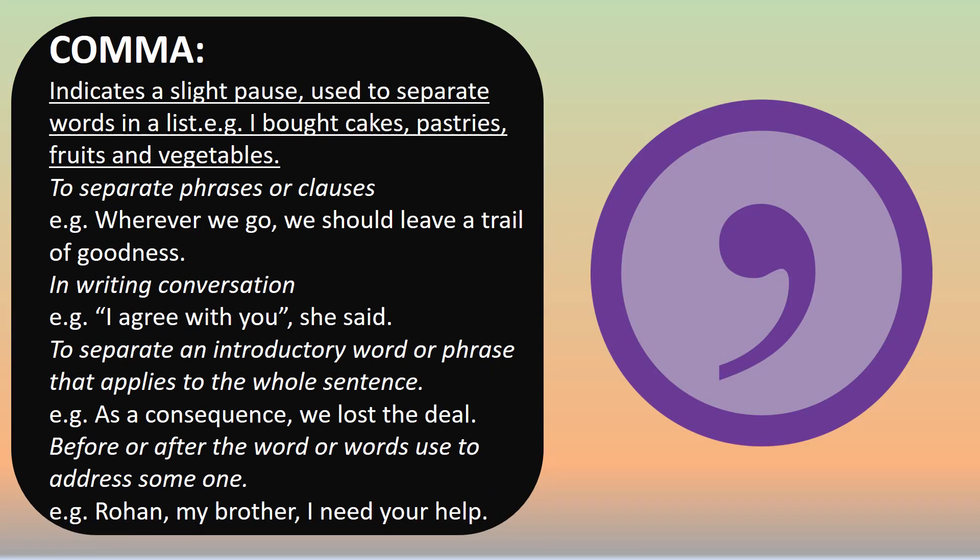Comma: we use a comma when listing a series of things. Example: 'I bought cakes, pastries, fruits and vegetables.' We also use a comma to separate phrases or clauses. Example: 'Wherever we go, we should leave a trail of goodness.' A comma is also used in writing conversation, that is, to mark off a direct quotation. Example: 'I agree with you,' she said.